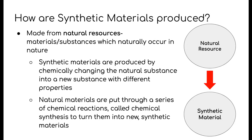Now that we know what synthetic materials are and what natural resources are, let's discuss how synthetic materials are produced. Synthetic materials are made from natural resources, which are those materials which naturally occur in nature. Although the starting substance — the natural resource — is natural and exists in nature, synthetic materials are produced by taking those natural materials and chemically altering them into a new substance with different properties. These natural materials are put through a series of chemical reactions, which we call chemical synthesis, to turn them into new synthetic materials.